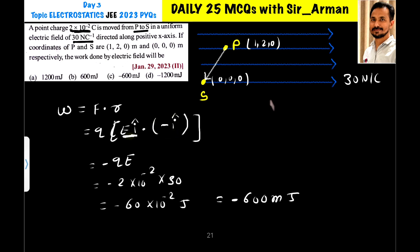So here it is E I dot I cap because other terms will disappear. I dot I is 1, so it is minus 1. So you have minus Q into E. Q is given here as 2 into 10 raise to minus 2 and electric field is given 30 Newton. So it is 60 into 10 raise to minus 2 joule which equals minus 600 millijoule.